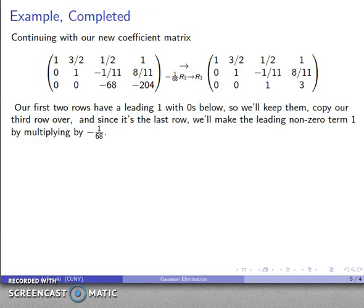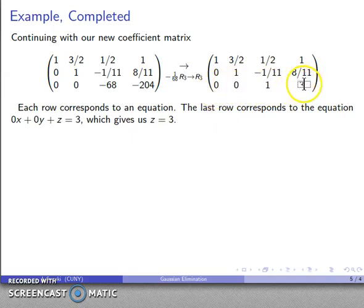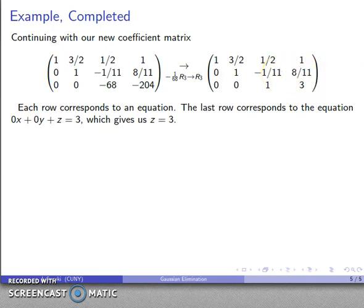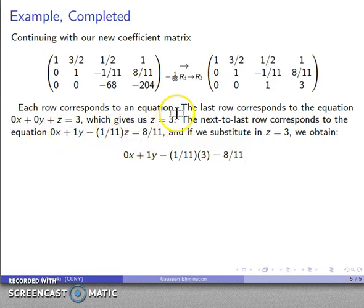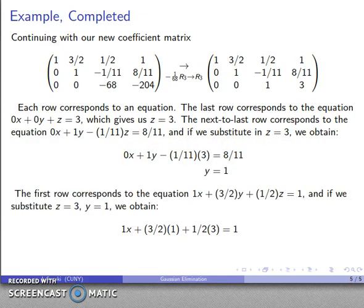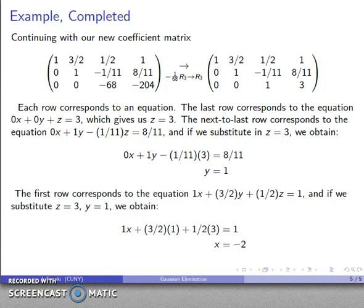Now I can solve by back substitution. Every row corresponds to an equation. The last row gives 0x plus 0y plus 1z equals 3, so z equals 3. The second row gives 0x plus 1y minus (1/11)z equals 8/11; substituting z equals 3 and solving gives y equals 1. The first row gives 1x plus (3/2)y plus (1/2)z equals 1; substituting y equals 1 and z equals 3 gives x equals negative 2. The solution is x equals negative 2, y equals 1, z equals 3.